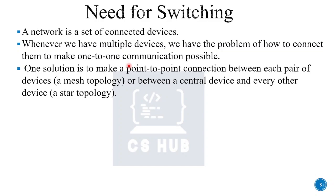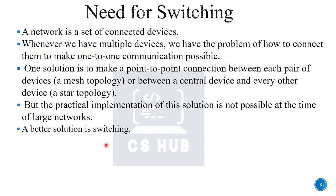In the mesh topology, we have a point-to-point connection. If we use a central device, you will not have one-to-one communication. We can use a star topology with a central device. We have different methods here, but using a full mesh topology arrangement for a large network is not practical to implement.